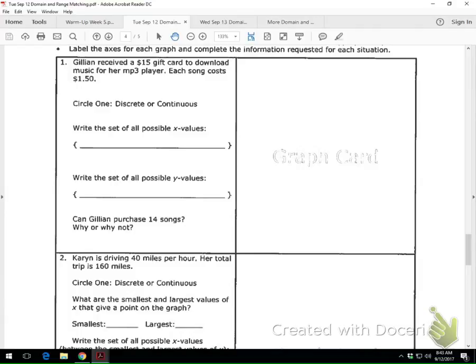Okay, it says Gillian received a $15 gift card to download music for her mp3 player. Each song costs $1.50. Okay, so first of all, discrete or continuous? Discrete. Perfect. So which graph did you choose? Should be graph B. So all you had to do is put B in there. Hold on a second. Let me unfreeze my, there you go, right there. Should just be graph B.